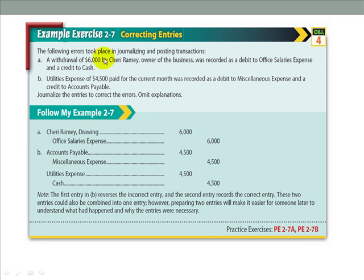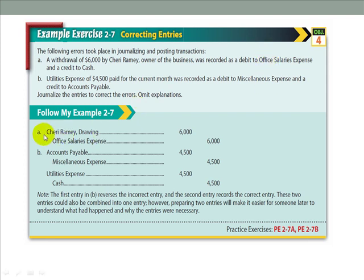Now let's look at correcting entries. In this example from the book, a withdrawal of $6,000 by Cherry Ramey, owner of the business, was recorded as a debit to office salaries expense and a credit to cash. We need to correct this because while the credit to cash is correct, office salaries expense is not — it should have been a debit to the drawing account. To correct this, we will not touch the cash account since it was correct. We will debit drawing for $6,000 and credit office salaries expense for $6,000 to offset the incorrect debit from the original entry.